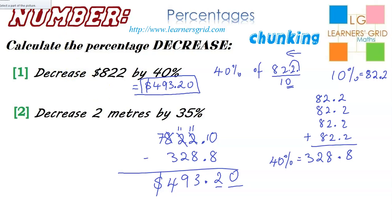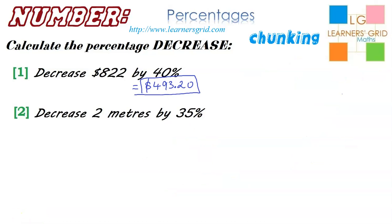Let's tidy this board up a little bit and take a look at number two. Number two says to decrease two meters by 35%. Okay, so 35%, let's get our 10%. So, 10% of 2 is, if I get 2 and I divide by 10,